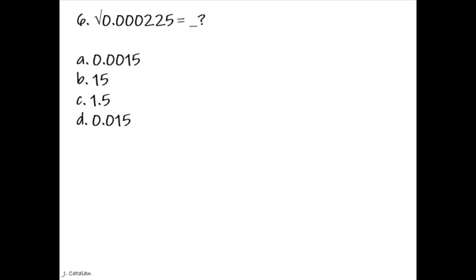Question: Square root of 0.000225 equals. Answer: 0.015. Question: Square root of 0.00000081 equals. Answer: 0.0009.